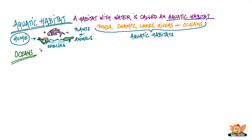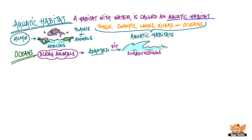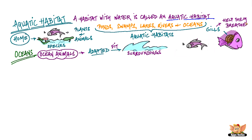Oceans. The bodies of some ocean animals have adapted to fit into the water's surroundings. For example, fish. Fish have a streamlined body that allows them to glide through water easily. They have gills that substitute lungs to help them to breathe.